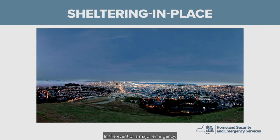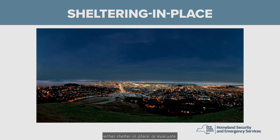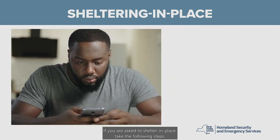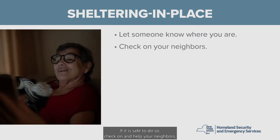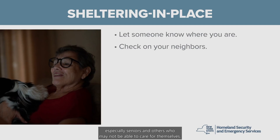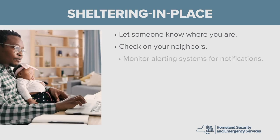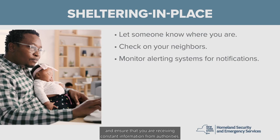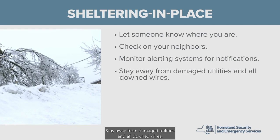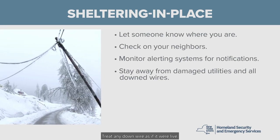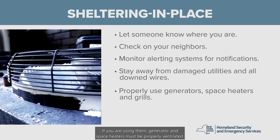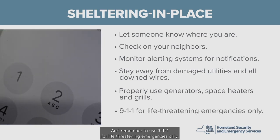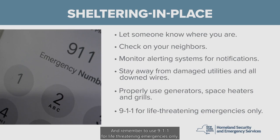In the event of a major emergency, you may be asked to either shelter in place or evacuate. If you are asked to shelter in place: let someone know where you are; check on and help your neighbors, especially seniors; monitor alerting systems such as NY Alert for notifications; stay away from damaged utilities and all downed wires — treat any downed wire as if it were live; ensure generators and space heaters are properly ventilated; and remember to use 911 for life-threatening emergencies only.